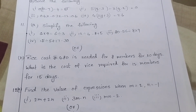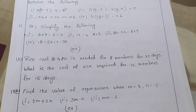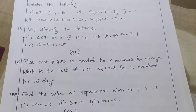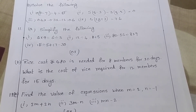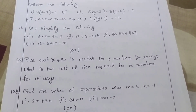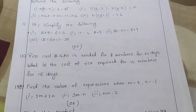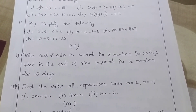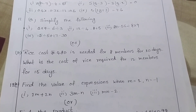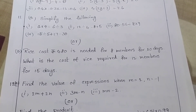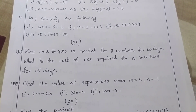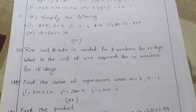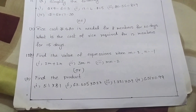Rice costing 480 rupees is needed for 8 members for 20 days. What is the cost of rice required for 12 members for 15 days? Find the value of the expression when M is equal to N is equal to minus 1. First: 2M plus 2N. Second: 3M minus N. Third: MN minus 2.